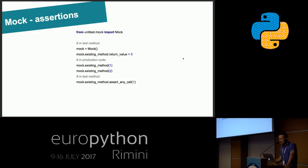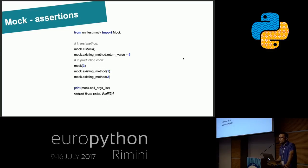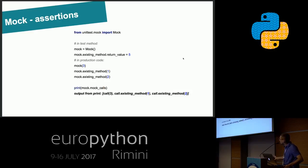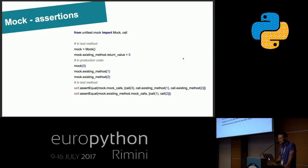There are more complex cases. For example, if a method was called a few times with different arguments, we can use assert_any_call. In the Python documentation you can find many more examples. For instance, if we call a mock directly and also call methods on it, we can use call_args_list to check all direct calls, method_calls to check calls to methods defined on a mock, or mock_calls to get all of them. In unit tests, we can compare existing calls with a list of expected call objects.